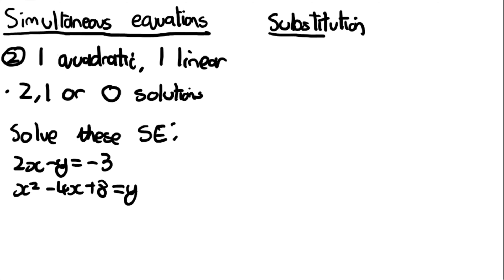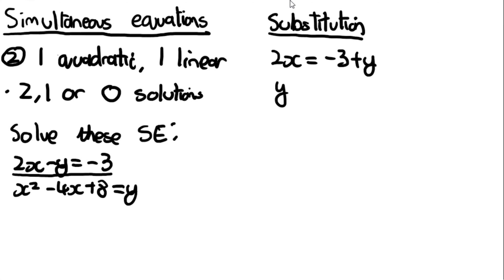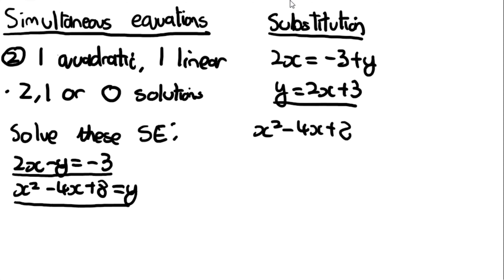For the example: solve 2x − y = −3 and x² − 4x + 8 = y. Rearrange the linear equation to make y the subject: y = 2x + 3. Then substitute into the quadratic: x² − 4x + 8 = 2x + 3, which rearranges to x² − 6x + 5 = 0.